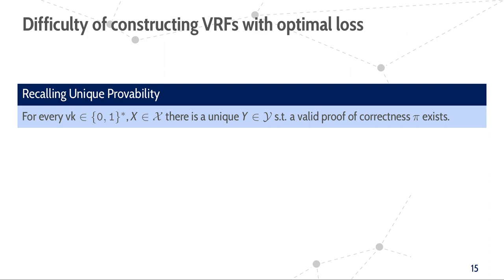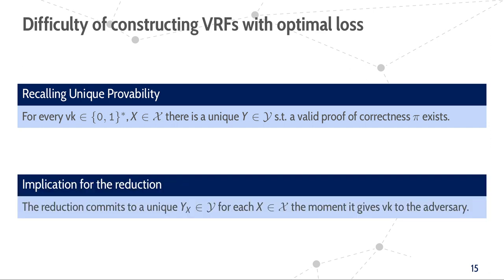Next, let us look into why there is such a significant difference between the tightness of reductions for VRFs and for unique signatures. For this purpose, let us recall the uniqueness property of VRFs that requires that there is a unique VRF output Y for each combination of input and verification key for which a valid proof exists. For the reduction, this means that it implicitly has to commit to all VRF outputs the moment it gives the verification key to the adversary. It could also not generate something like a lossy verification key that would allow it to indistinguishably forge VRF outputs because the uniqueness property also has to hold for maliciously generated verification keys.